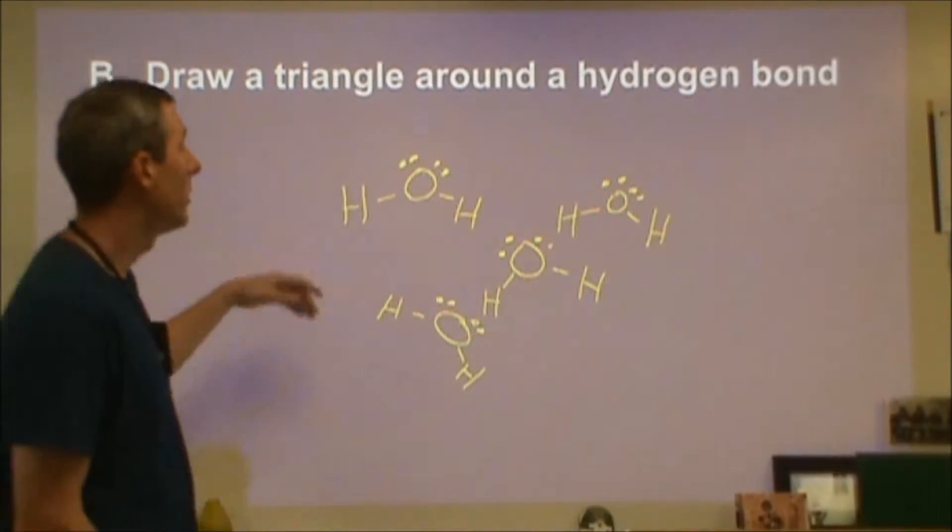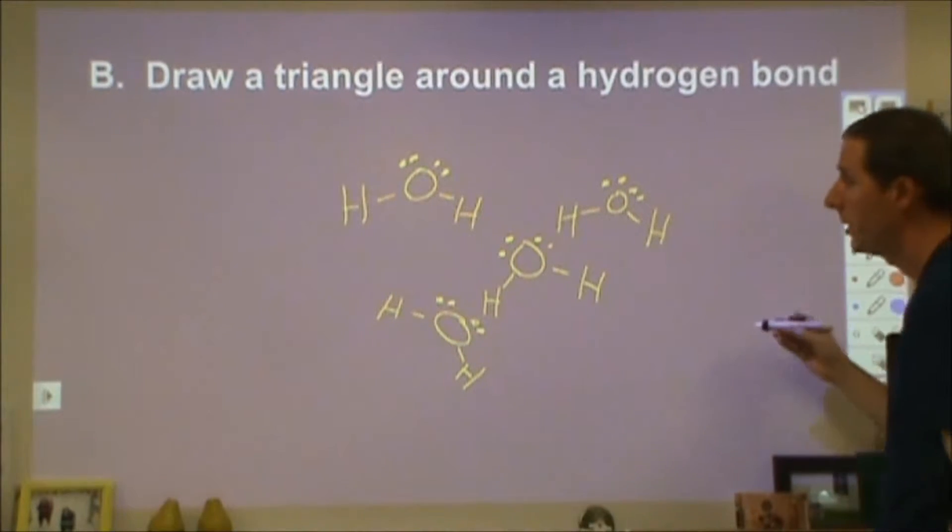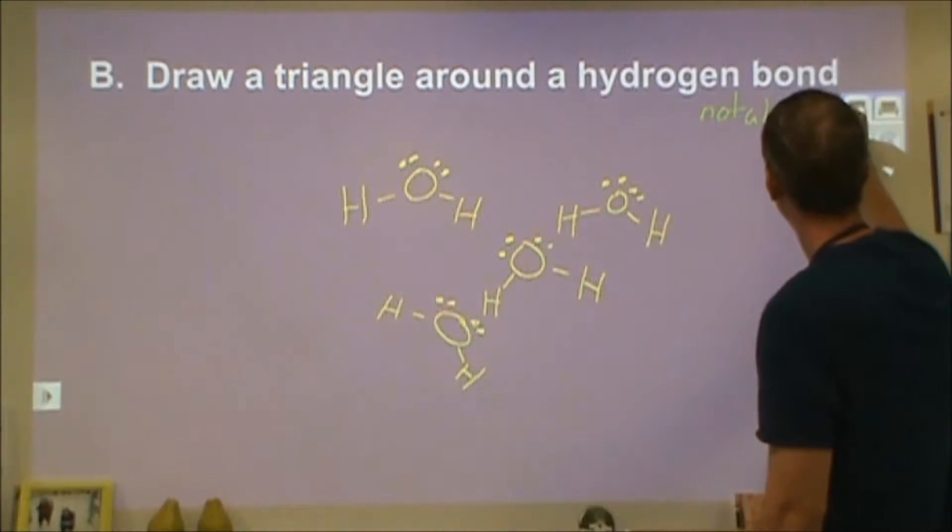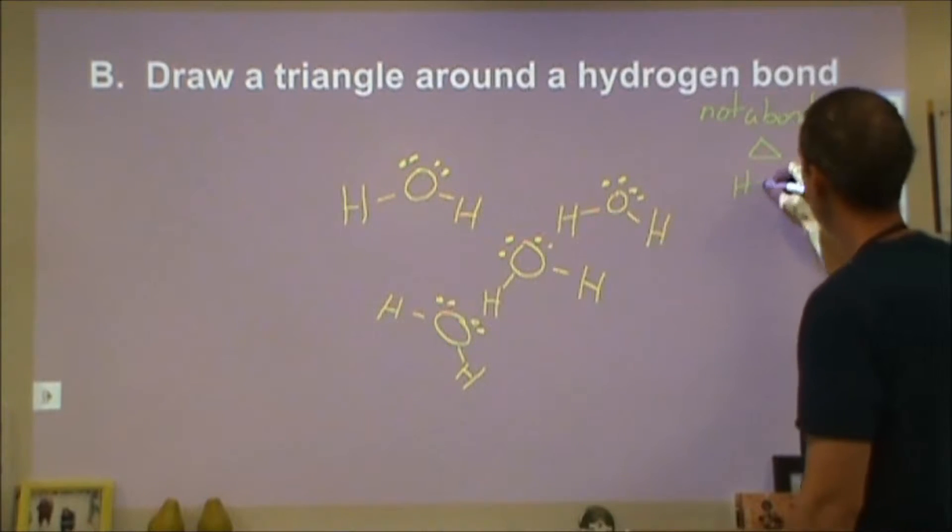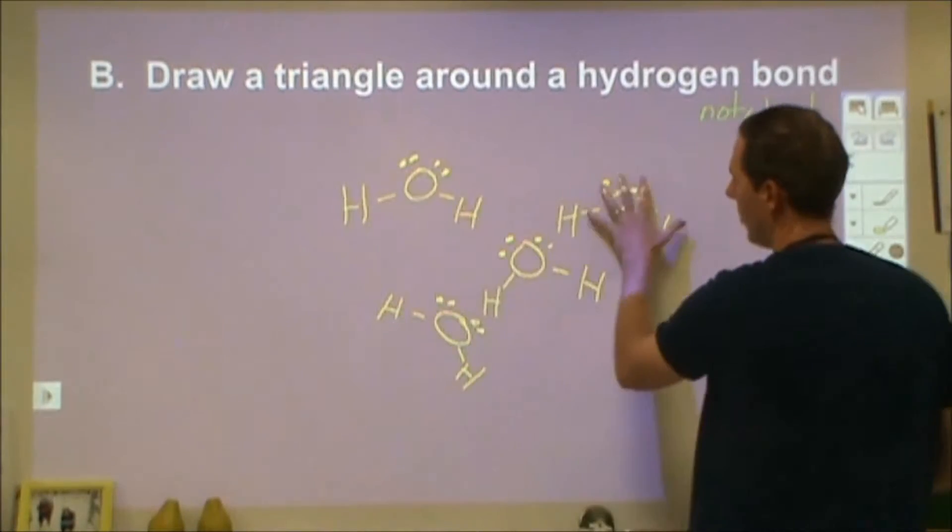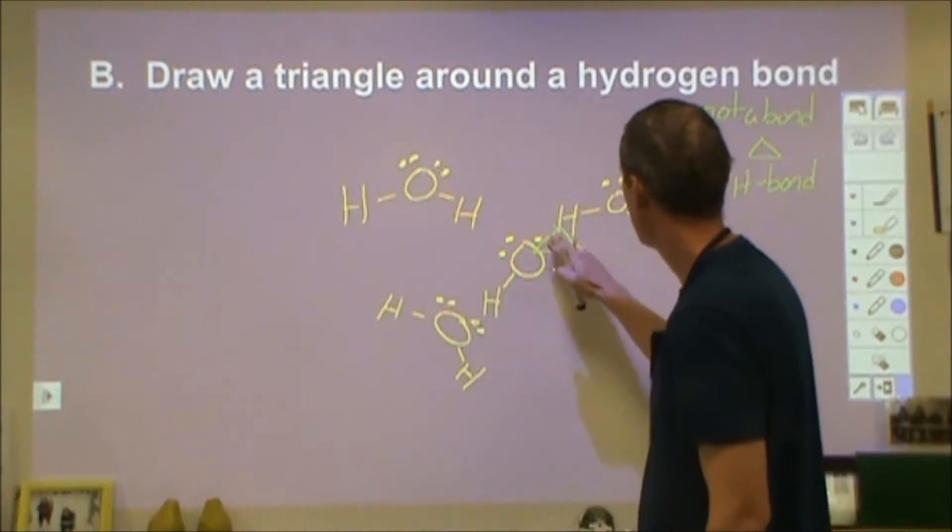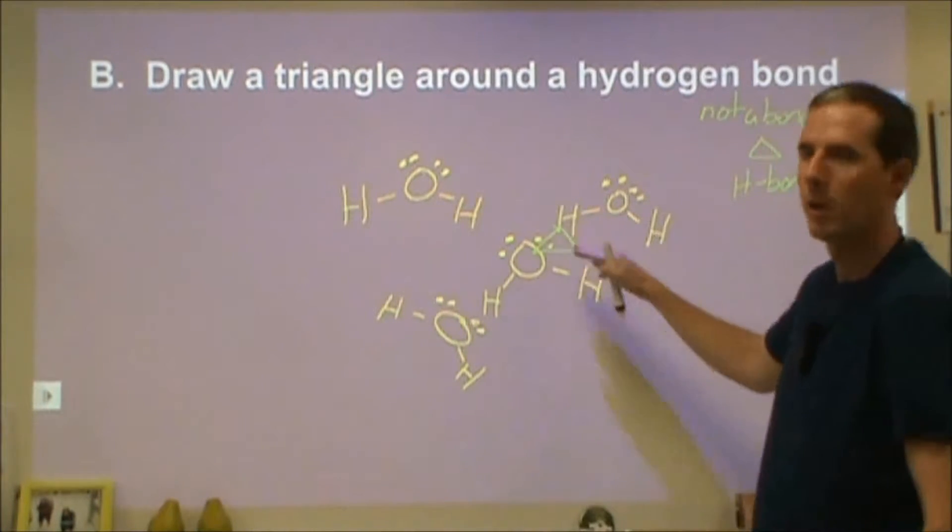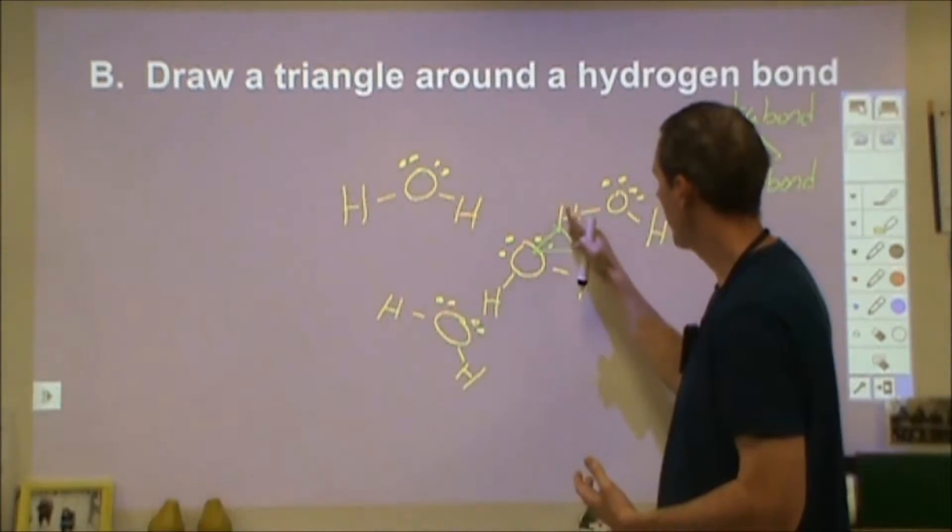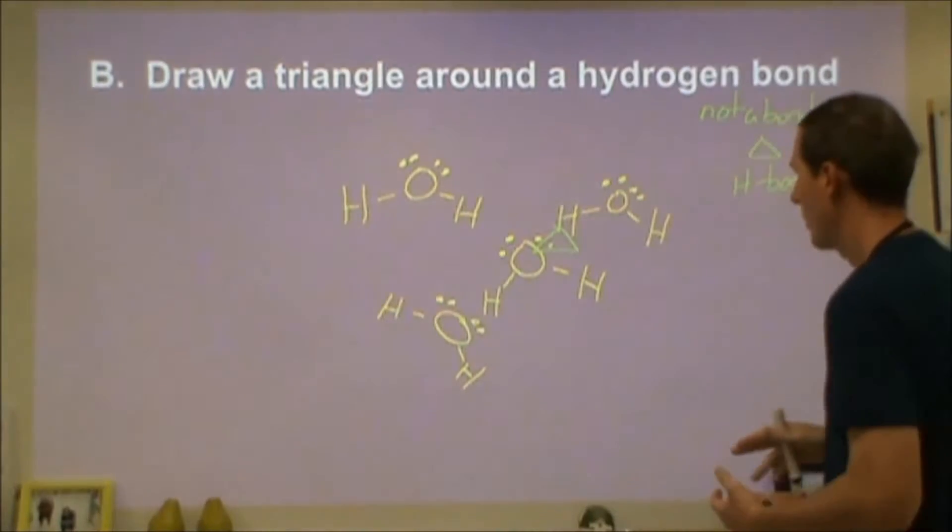Then it says draw a triangle around a hydrogen bond. This is a common difficulty for people, but the idea is that the hydrogen bond is not a bond. For our hydrogen bond, we are looking at an intermolecular force, two of these molecules sticking together. That triangle then is this interaction between this oxygen and this hydrogen. That's where we see the hydrogen bonding effect taking place, where we have an unusually strong attraction between this hydrogen and its proton and the electrons of this oxygen.